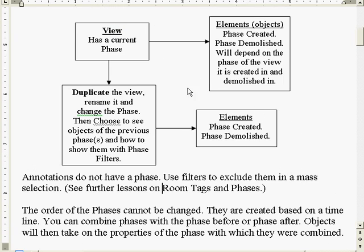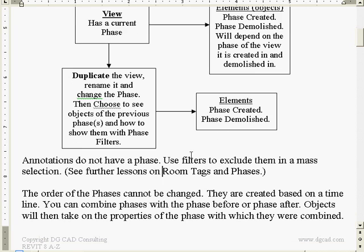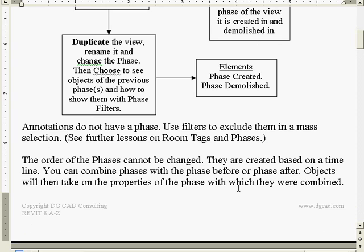What will happen is you can grab a bunch of objects - like we did with worksets - grab a bunch of objects and say they're on a different phase created. You can go into the properties and change that, but you won't be able to do that until you use your filters option. When you do a mass selection, remember to use your filter option to say just the walls or just the doors.